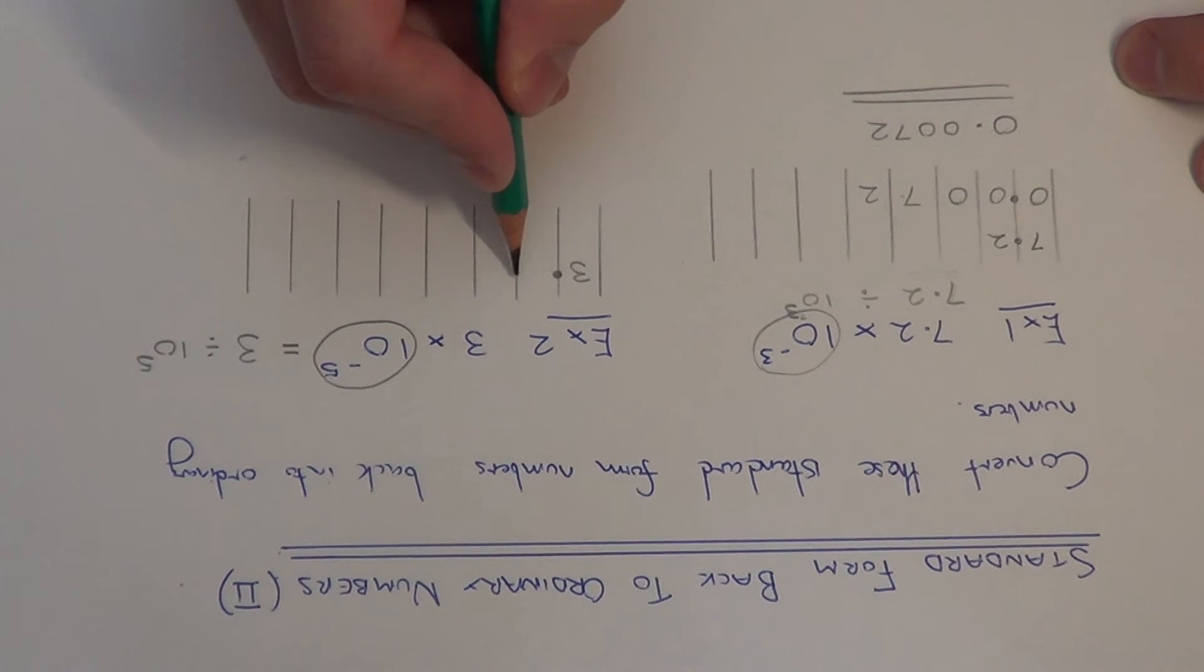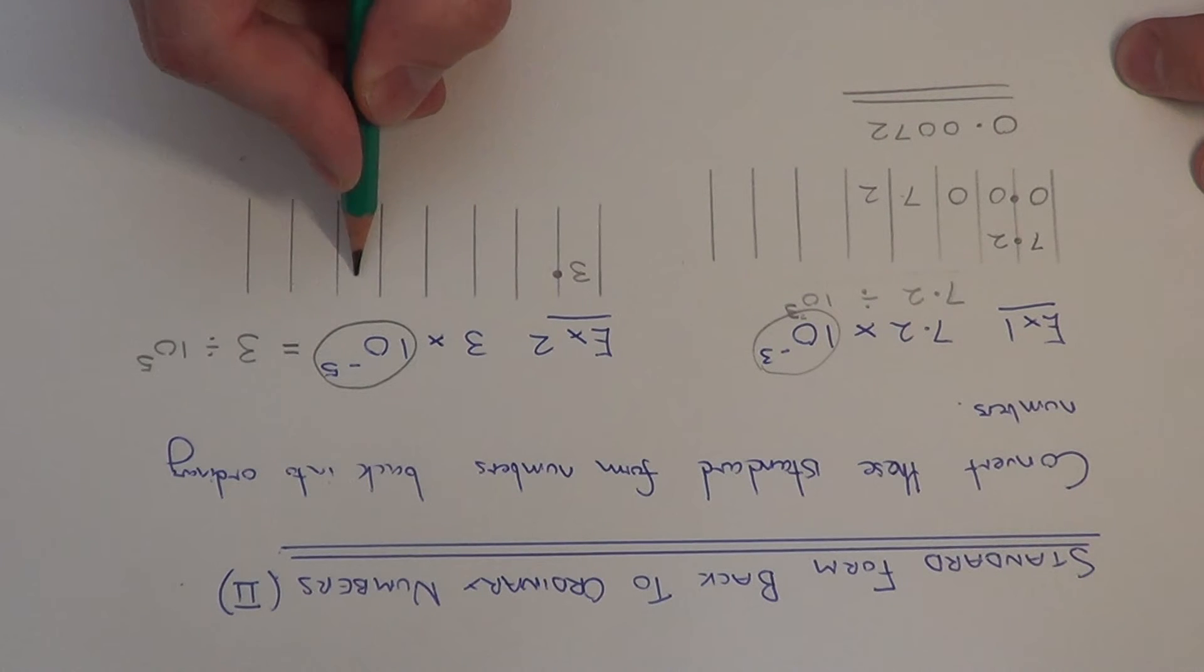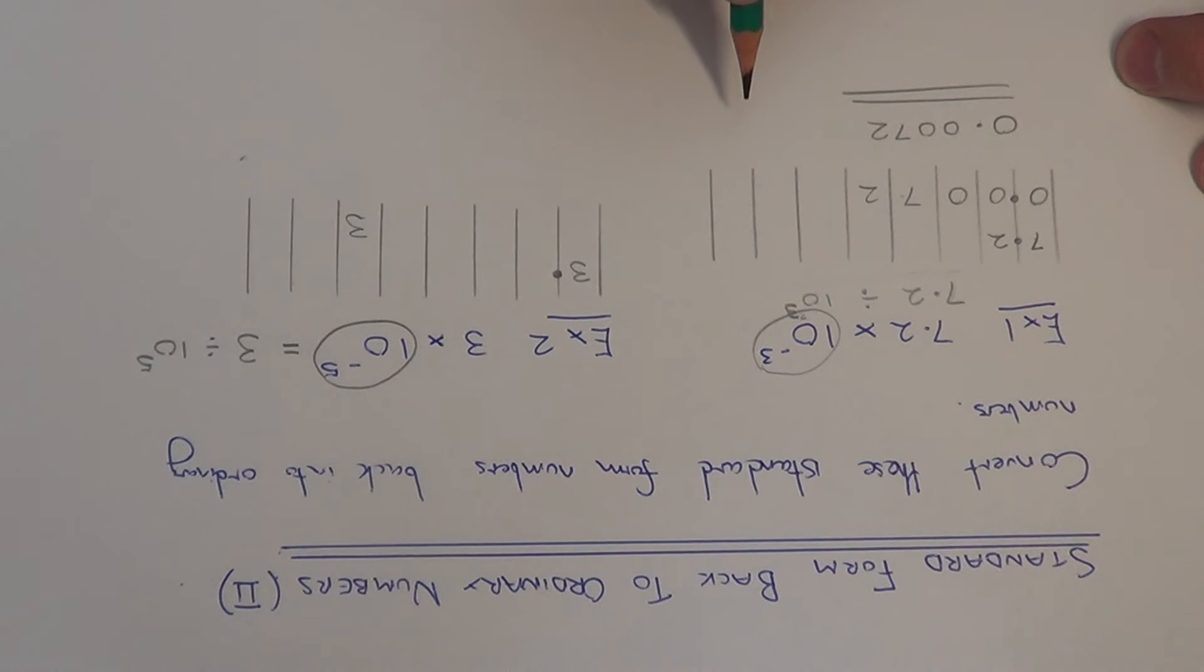So let's move the 3. 1, 2, 3, 4, 5. We can drop it into this column. The decimal point won't move.